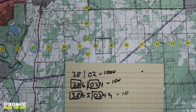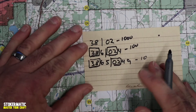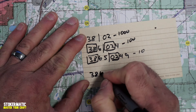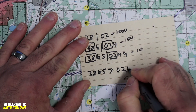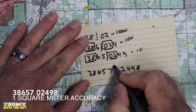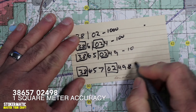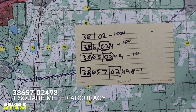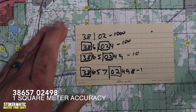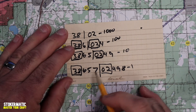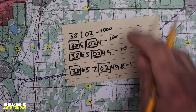GPS uses a satellite system — typically you'll have four satellites locked in when it gives you grid coordinates. It may give you something like 3865702498. GPS devices will tell you how accurate your reading is, whether it's within 10 meters or a hundred meters. It's going to give you an eight or a 10-digit grid coordinate, which gets you down to one meter accuracy. Now that's awesome.